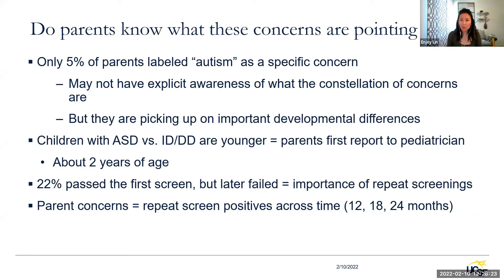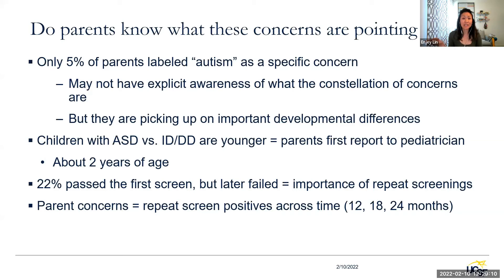Only 5% of parents labeled autism as a specific concern — they are picking up on important developmental differences but don't know what the constellation of symptoms means. In studies comparing children with ASD versus intellectual disability or developmental delay, children with ASD are usually younger when parents first report concerns — at about two years of age. Notably, 22% of kids later diagnosed with ASD passed their first screening but later failed, making repeat screenings important. Parents who have concerns generally maintain those concerns throughout subsequent well-child visits.